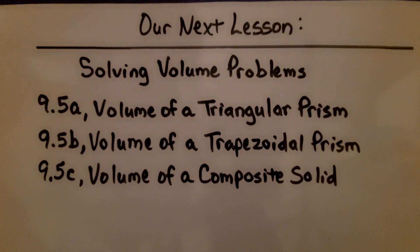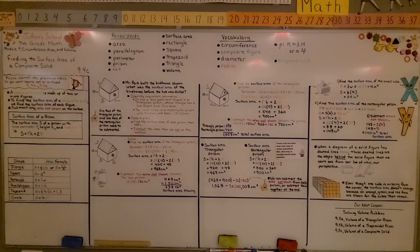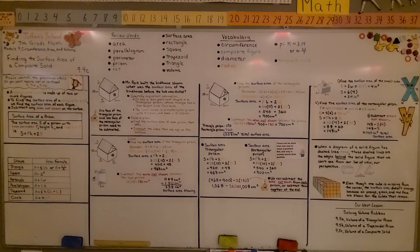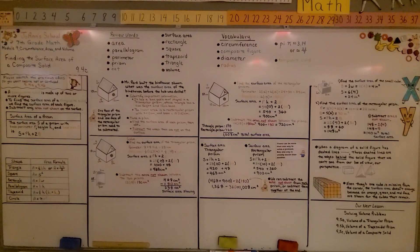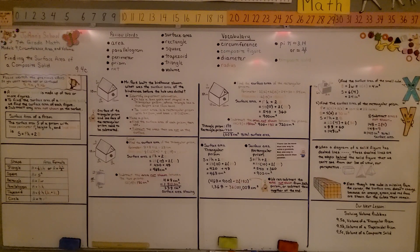We're finished with lesson 9.4 and moving on to 9.5 about solving volume problems — specifically the volume of a triangular prism. We only have a few more lessons until module 10, and there are only 13 modules total, so we're getting close to the end of seventh grade math. Stick with me, have a great day, and join me for the next lesson.